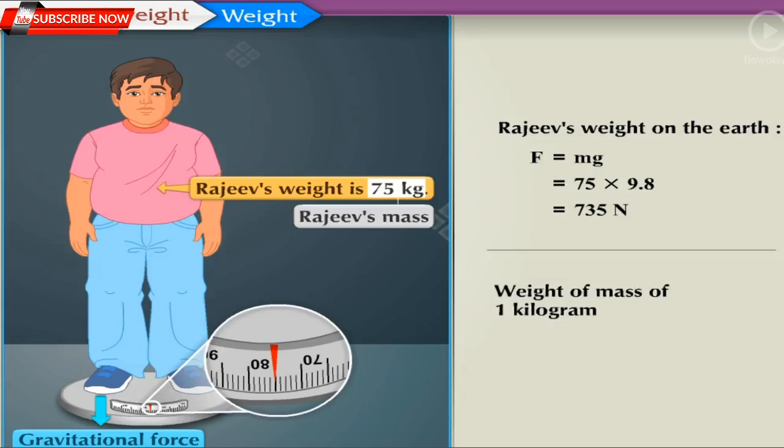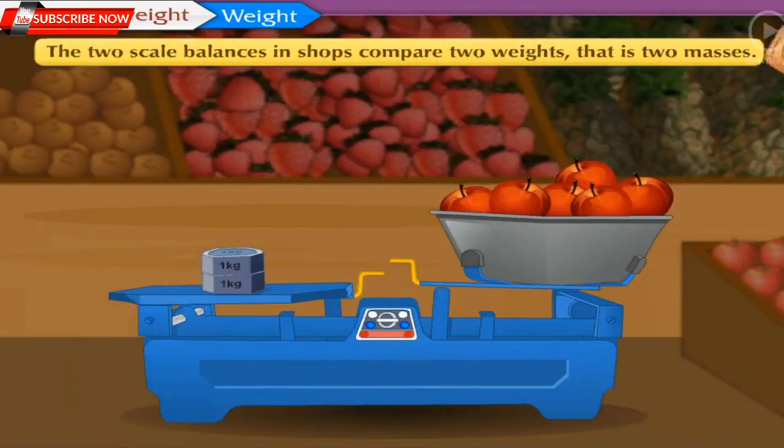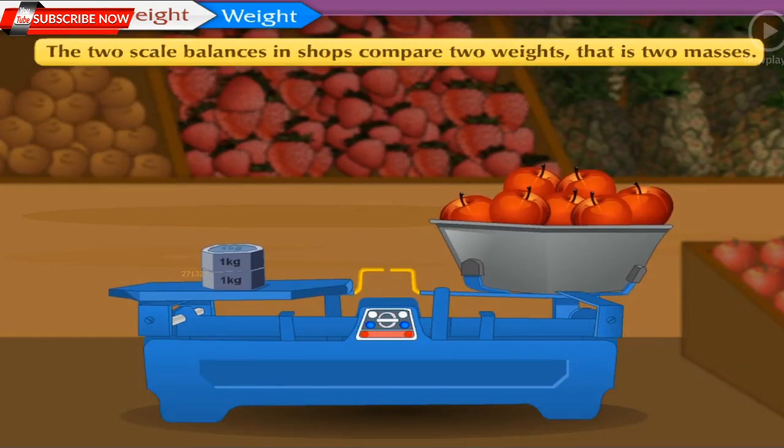The weight of mass 1 kilogram is equal to 1 into 9.8 which is equal to 9.8 newtons. Our weighing machines tell us the mass of objects. The two scale balances in shops compare two weights, that is two masses.